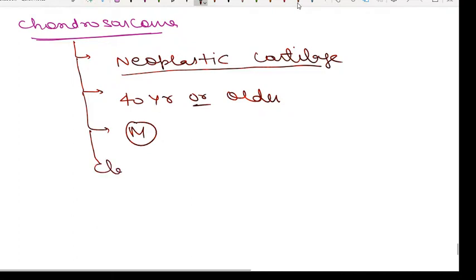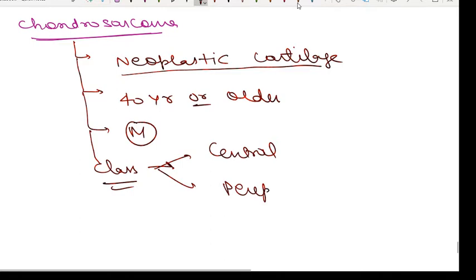According to anatomic site, chondrosarcoma is classified as central or peripheral tumors. About 90 percent are central tumors, involving the medulla. On the basis of microscopy, it is further classified into conventional, clear cell, dedifferentiated, and mesenchymal types.